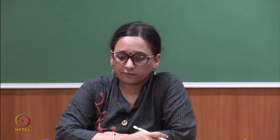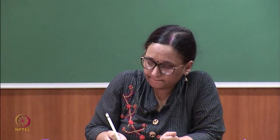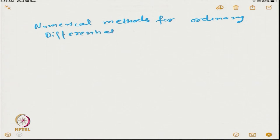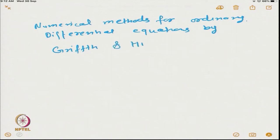Welcome to the second class in this course. The book we are following is 'Numerical Methods for Ordinary Differential Equations' by Griffith and Higgum, published by Springer. This is the book we will be following for this part of the course.